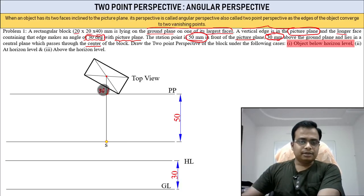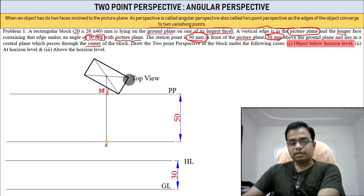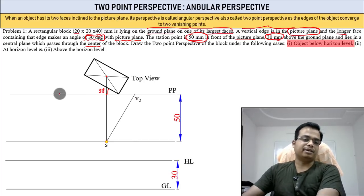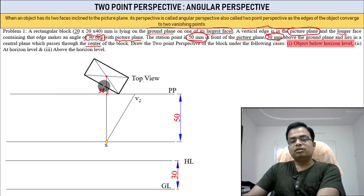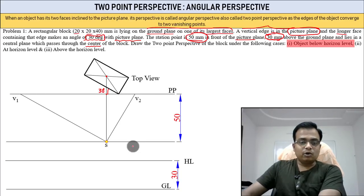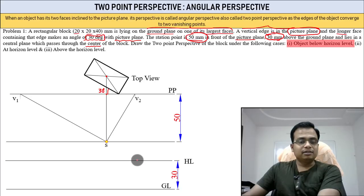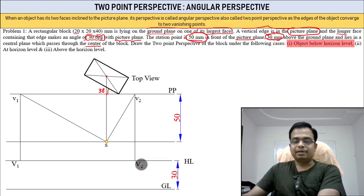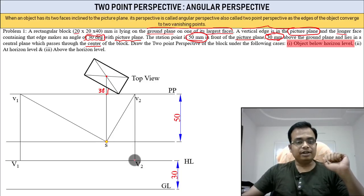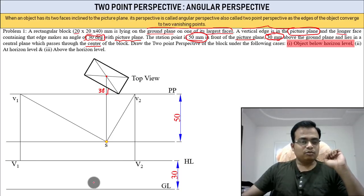To mark the vanishing points, use a mini drafter. Align the scale along one edge, tighten the screw, bring it to station point S, and draw a line — that gives you V2. Do the same along the other edge to get V1. Project vertical lines from V1 and V2 down to the horizon line. The edges on one side appear to converge at V2, and the edges on the other side converge at V1.